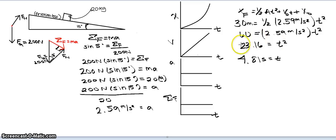Time squared would be equal to 23.16 after dividing by the acceleration. So, time squared is equal to 23.16, and the square root of that would be 4.81 seconds is equal to time.